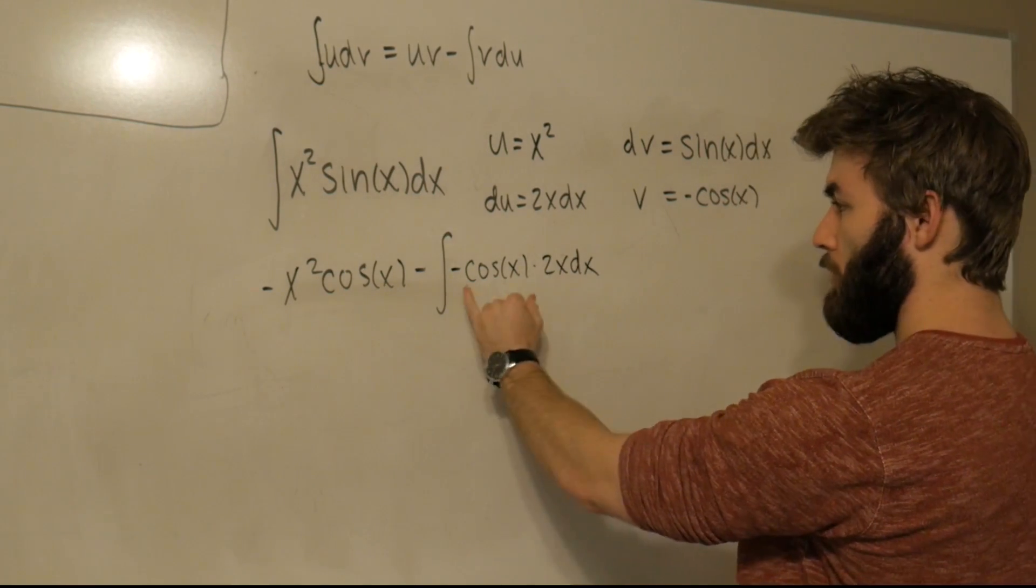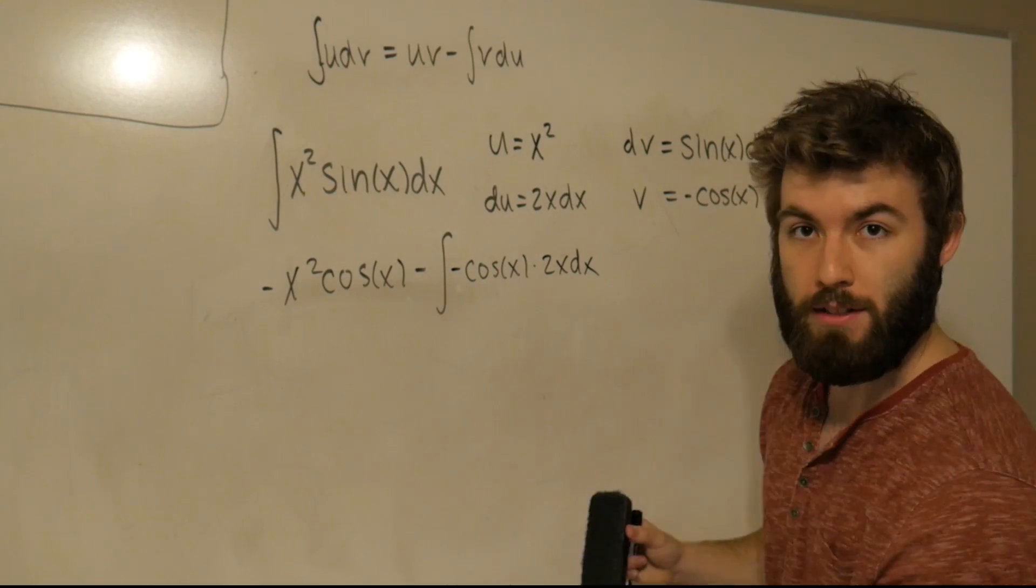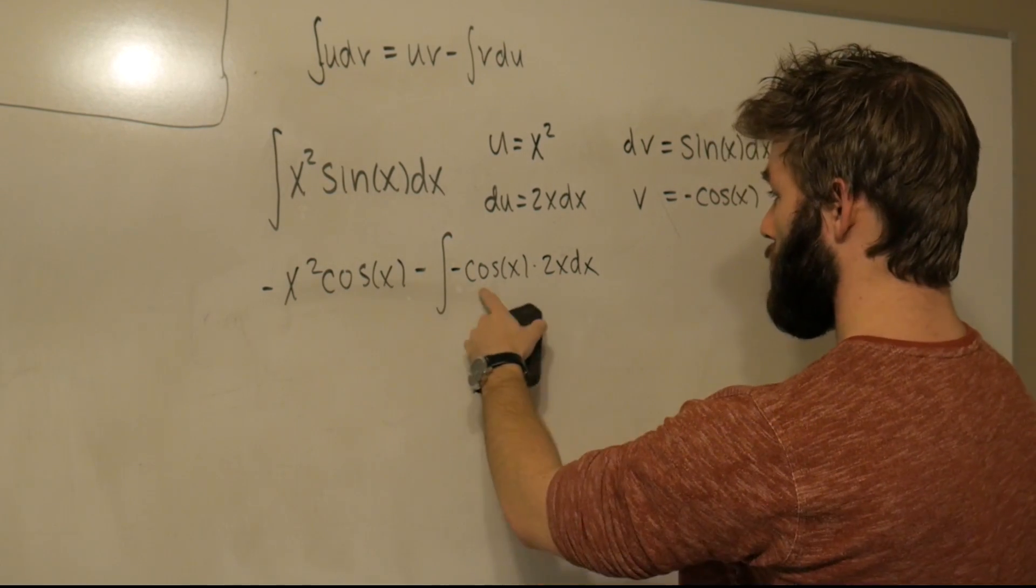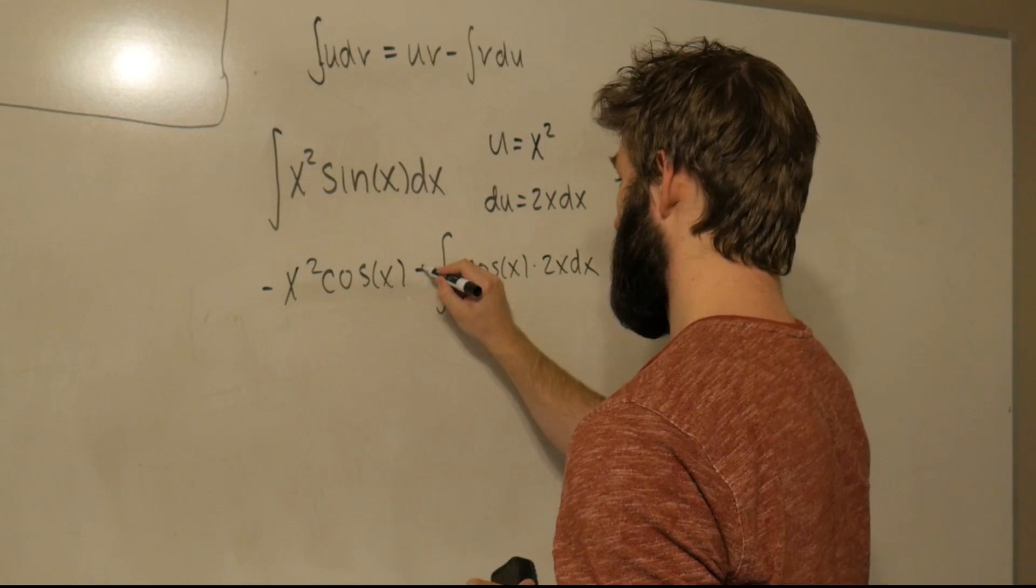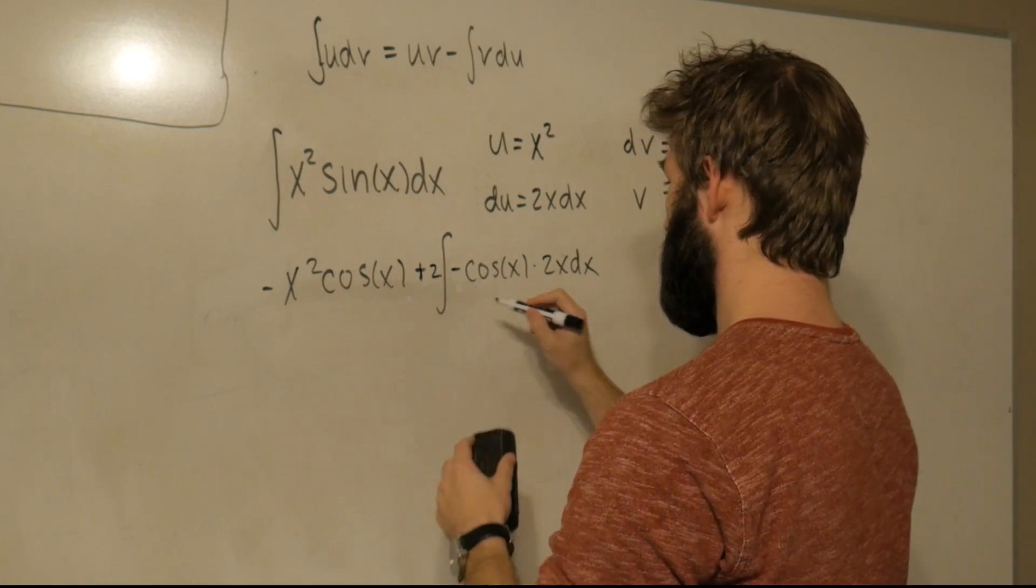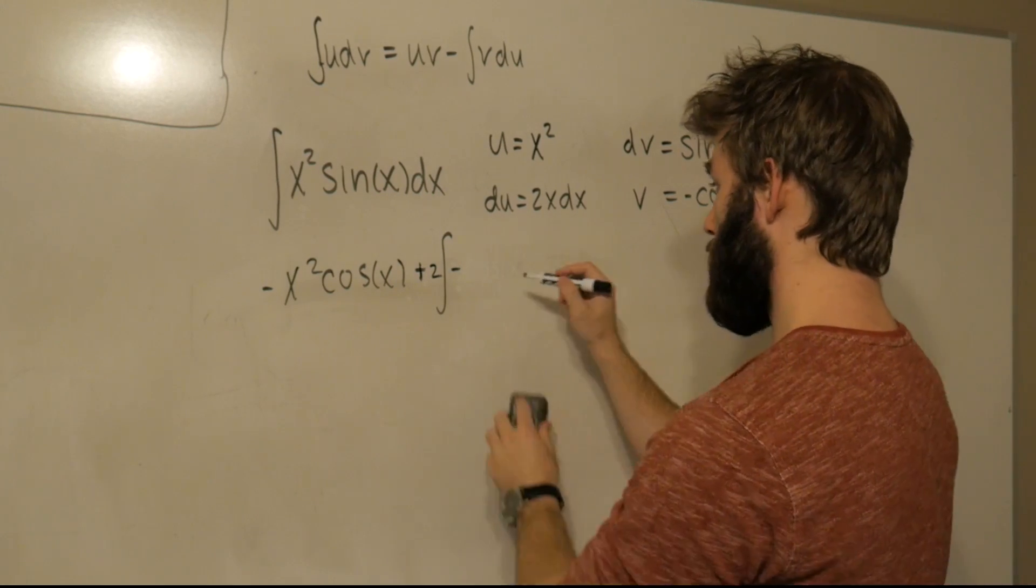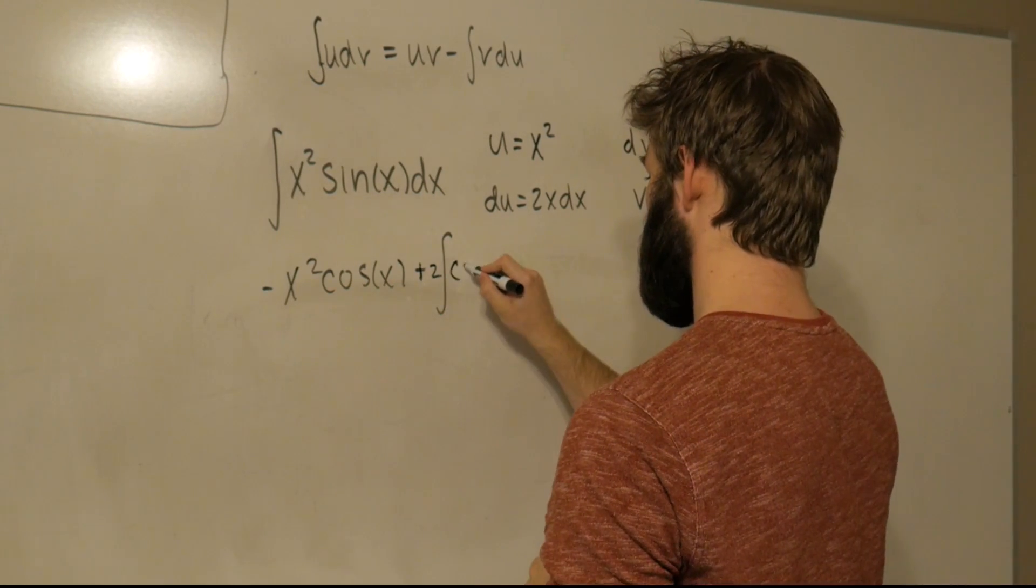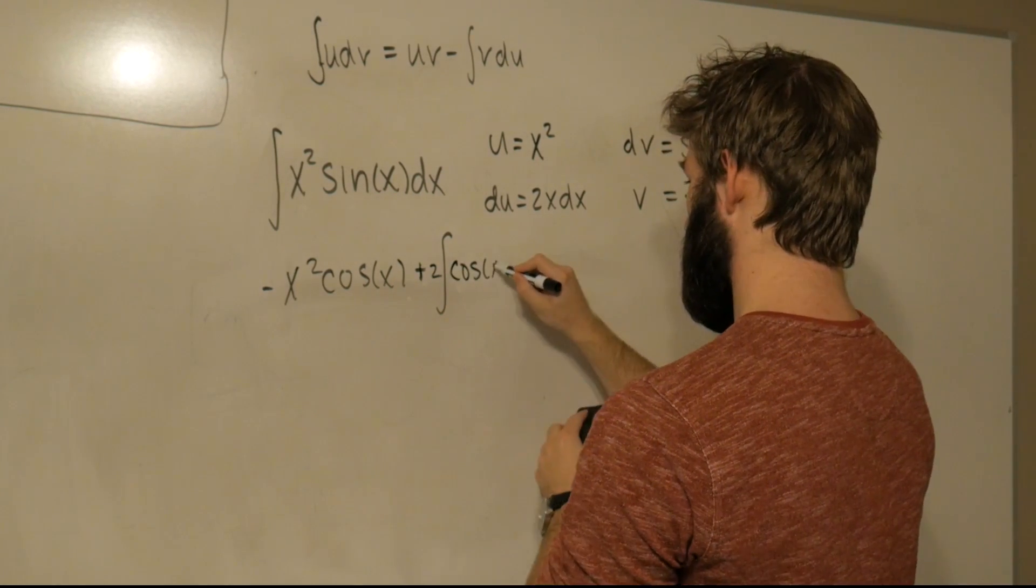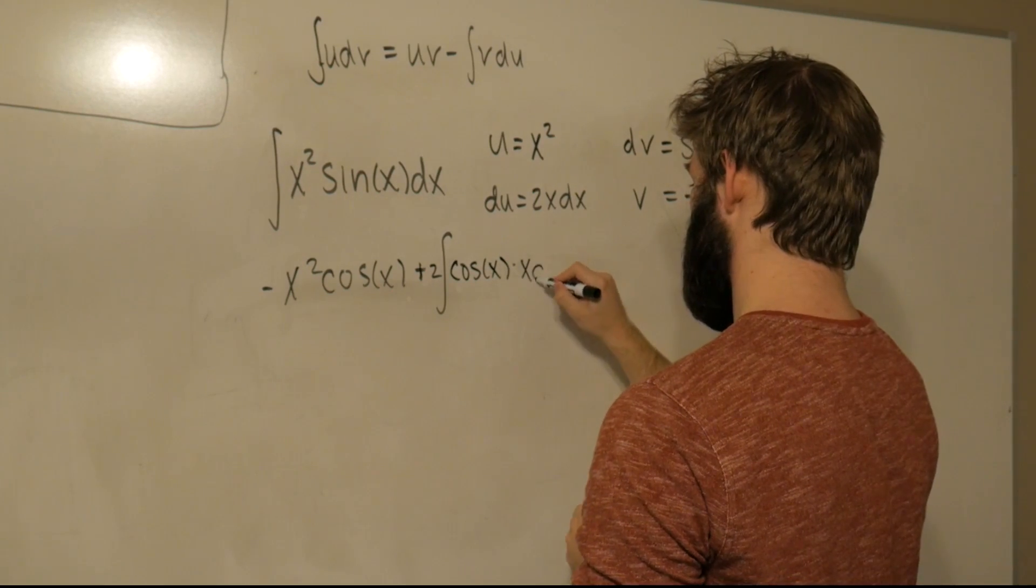Okay, we can bring out the 2 and the -1 outside of the integral because that's just a constant. And when we do that, this negative cancels with this. So this just becomes positive, 2 comes out. And I'm just going to factor out that 2 out here. So this is just going to be 2∫cos(x)·x dx.